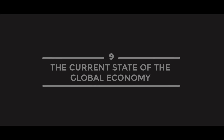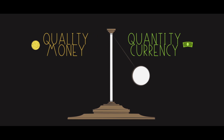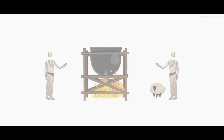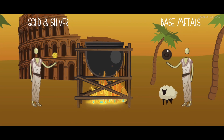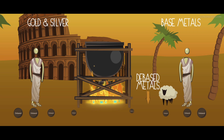Top 10 reason number 9: the current state of the global economy. Throughout history, societies have swung back and forth from quality money to quantity currency and back again. Originally, quantity currency took the form of debased coinage — gold and silver diluted by adding cheap and abundant base metals such as copper.